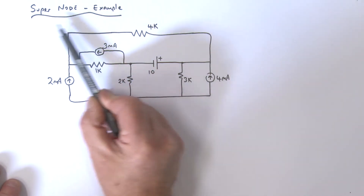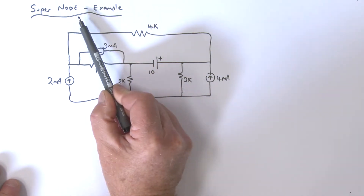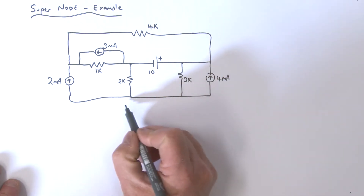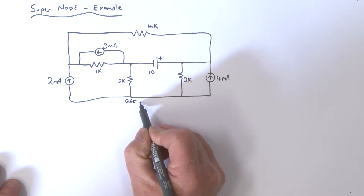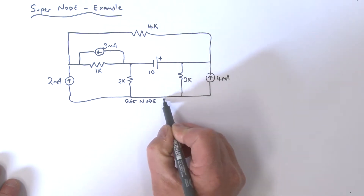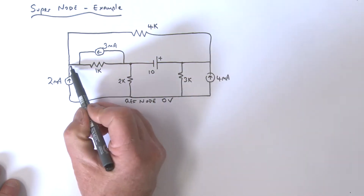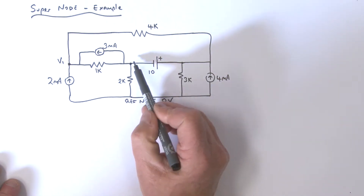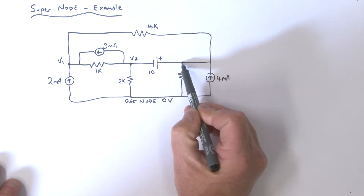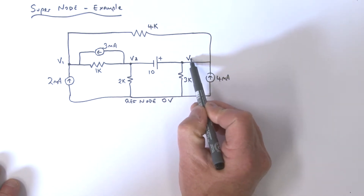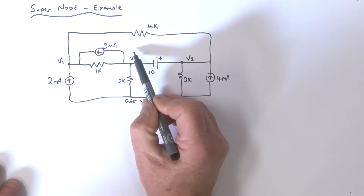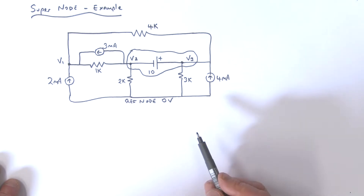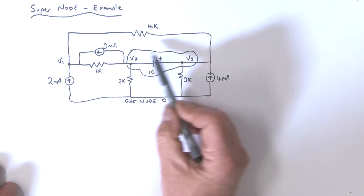Let's look at another example in relation to a supernode. I've got this circuit here. This is my reference node at zero volts. I'm going to call this the v1 node, this will be the v2 node, and this one over here is the v3. We're going to call all of this over here my supernode — what we've circled is really that supernode.